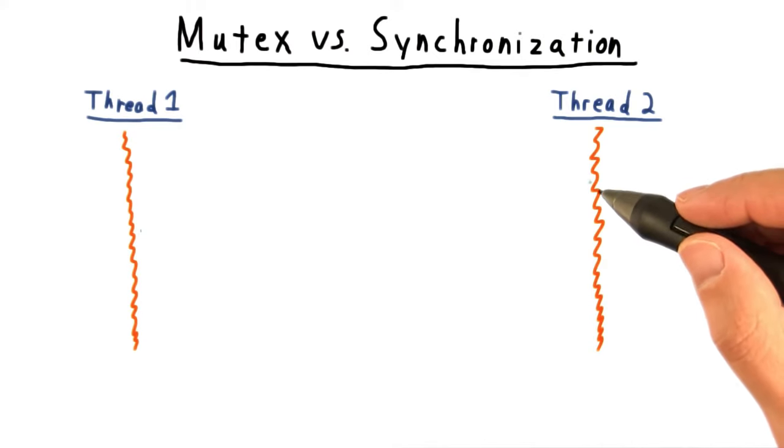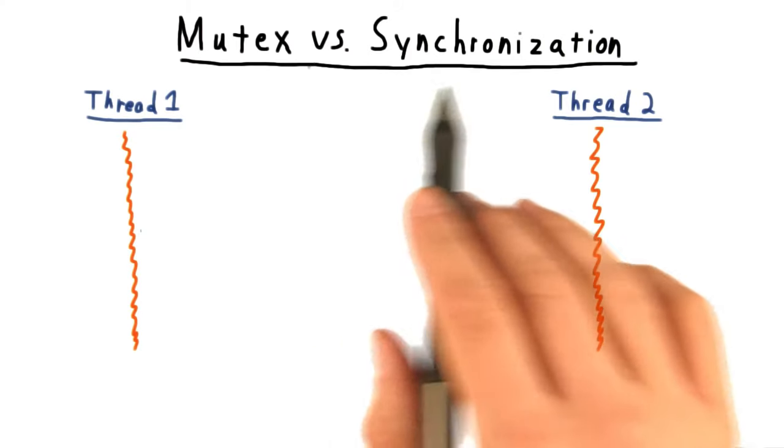Before talking about conditional wait variables, I want to make a distinction between mutual exclusion and synchronization.